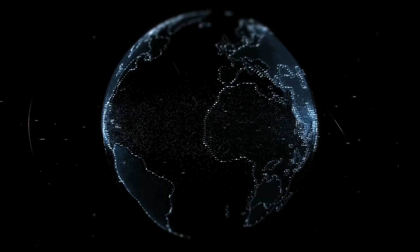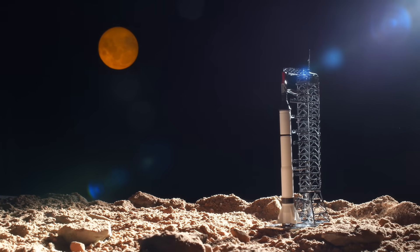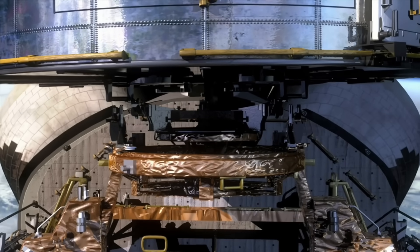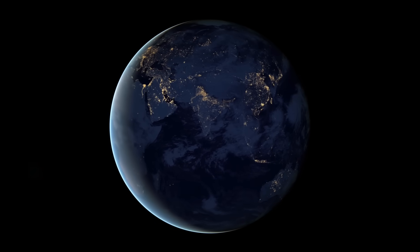Launch Complex 39A at Kennedy Space Center—the very same launch pad where Neil Armstrong and Buzz Aldrin departed for the moon. But this time, something was different. A Falcon 9 rocket with the tail number B-1067 stood ready on the pad, and this rocket knew this journey very well.